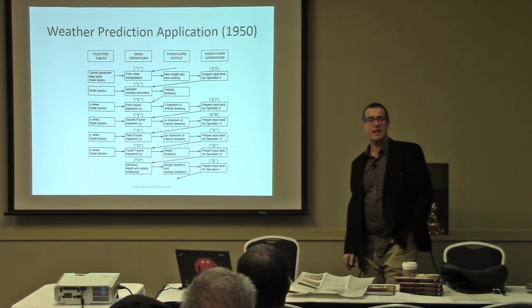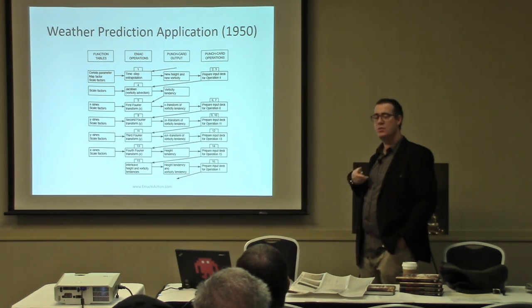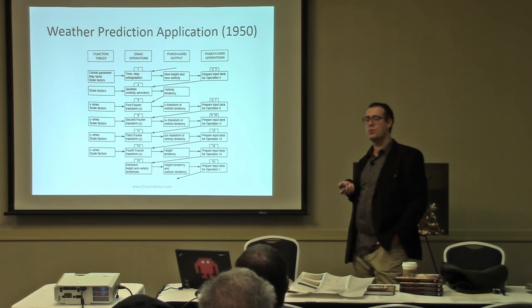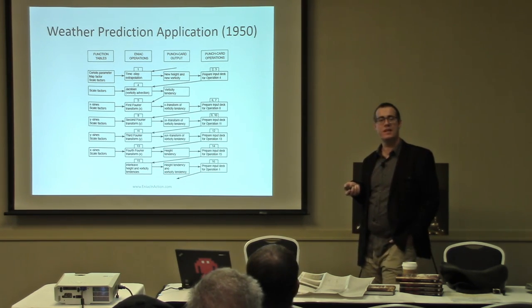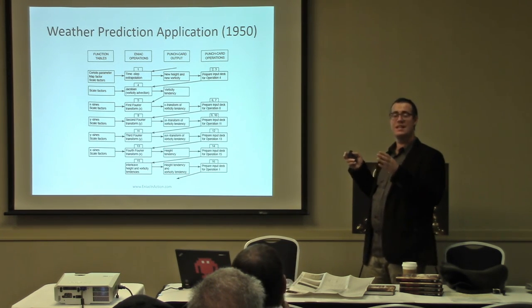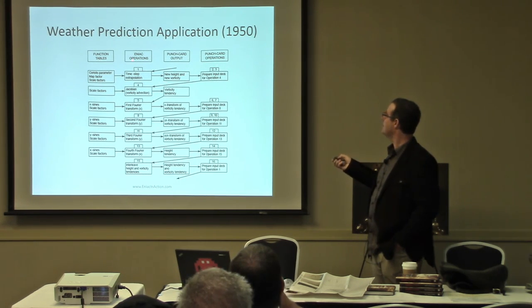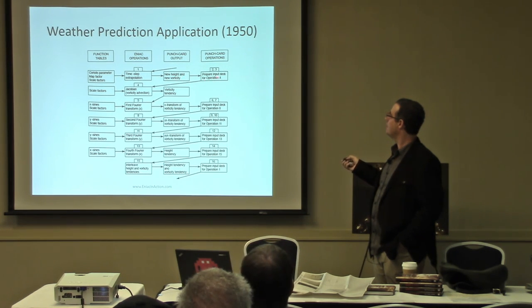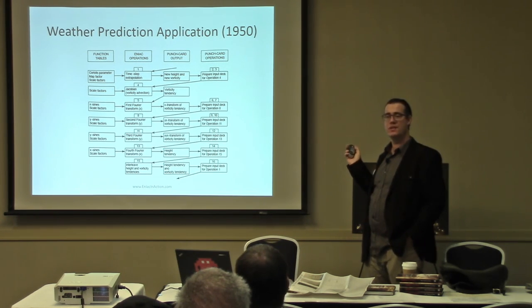This is perhaps the most complicated job ever run on ENIAC: John von Neumann's team at the Institute for Advanced Studies were trying to do numerical weather calculations — the first time that was ever done. They got tired of waiting for their own computer to be ready and figured out how to get the job down into ENIAC-sized pieces. Between each ENIAC operation was a bunch of punch card output and manual punch card operations to change the output from one step into a form ready to be the input for the next step.